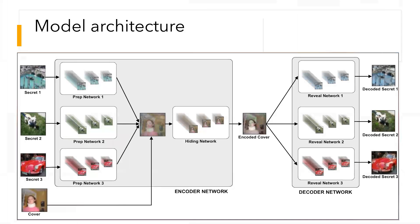Coming to the model architecture, we are using three different CNN architectures for the prep network, hiding network, and the reveal network. Each of these is a 3-layer network with 50, 10, and 5 layers. Each secret image is passed through the prep network and then concatenated with the cover image. The concatenated image is then passed through the hiding network to generate the encoded cover, which looks just like the original cover. This encoded cover can then be used in the decoder network to generate the decoded secrets, with different reveal networks for each decoded secret.